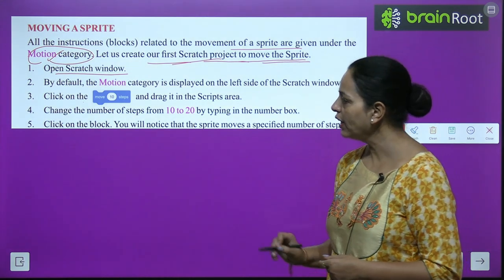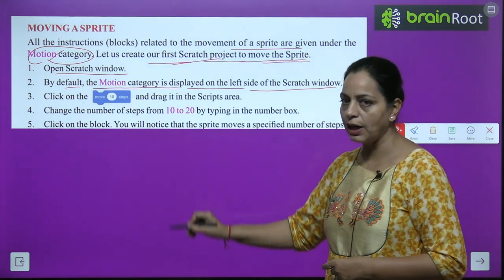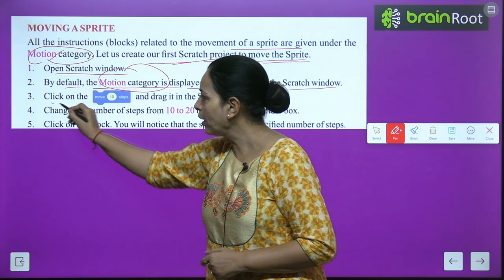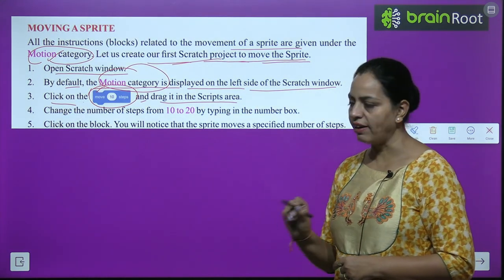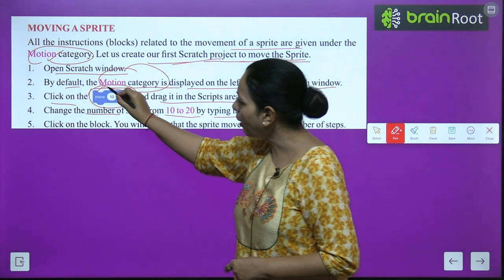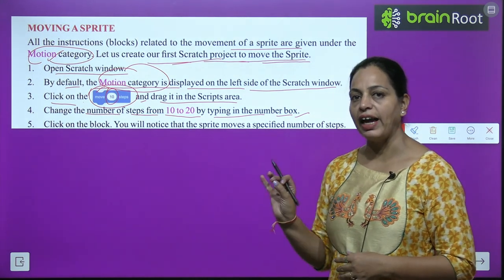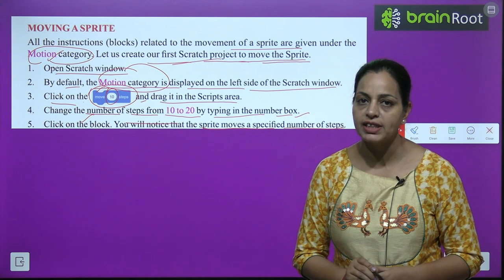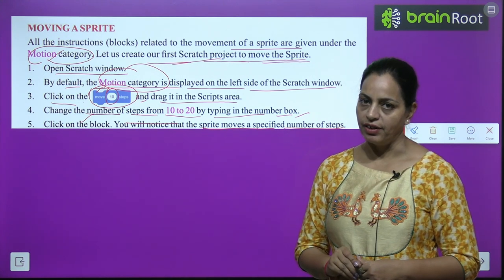To move a sprite, follow these steps: First, open the Scratch window. Second, by default the Motion category is displayed on the left side of the scratch window in the block palette. Third, click on the 'Move 10 steps' block and drag it into the script area. Fourth, change the number of steps from 10 to 20 by typing in the number box. When you click on the sprite, it will move according to the steps given.